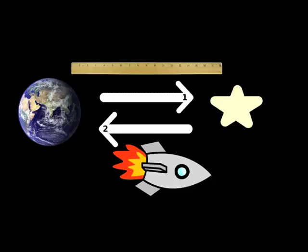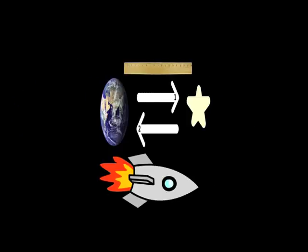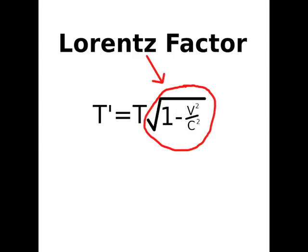Imagine there's a giant ruler along our path. The faster we go, the more space contracts around us, making the distance we have to travel shorter. So what is the relation between velocity and length contraction, or velocity and time dilation? Well for both cases, it's the same. This relation is called the Lorentz factor.